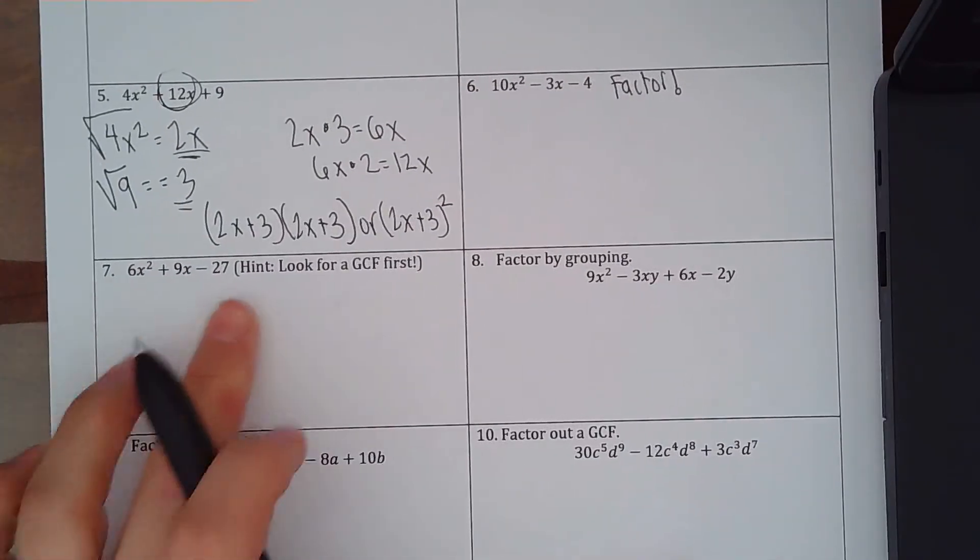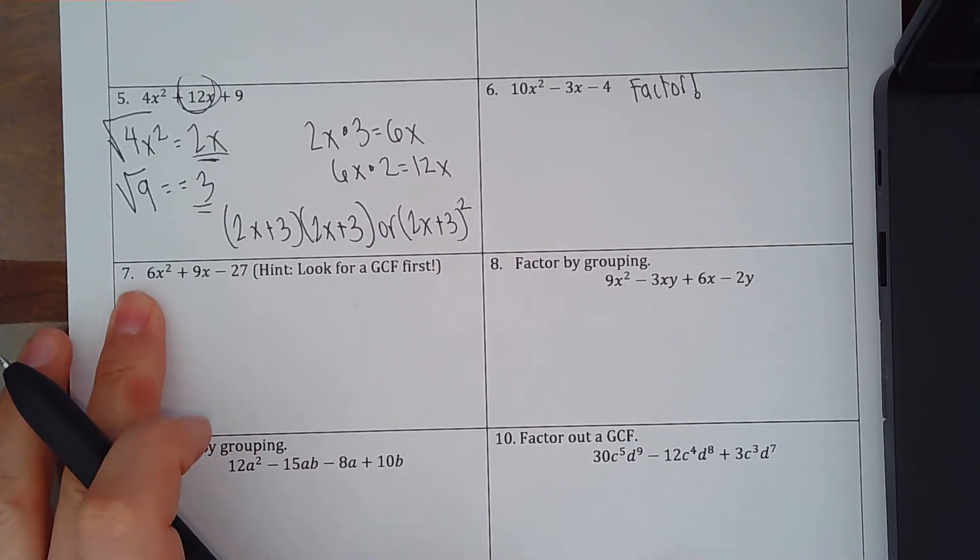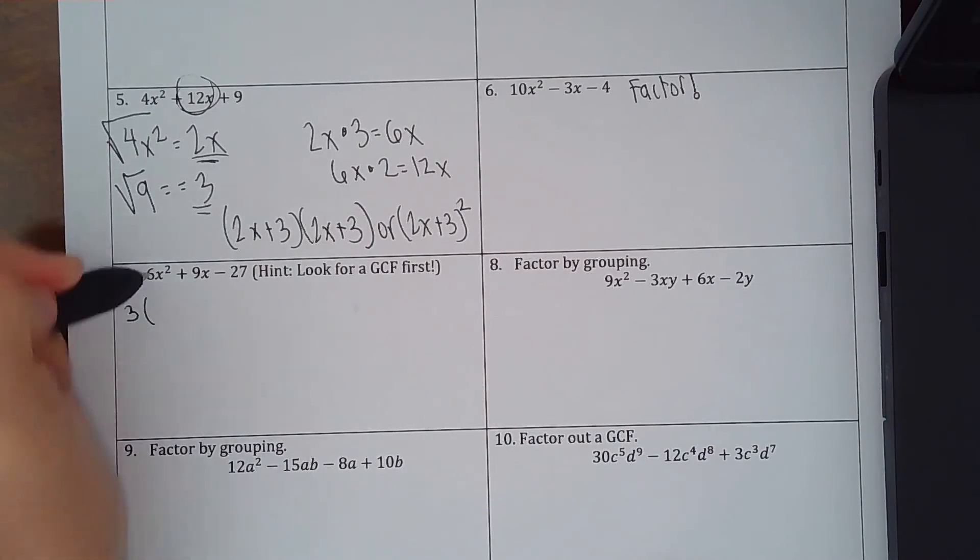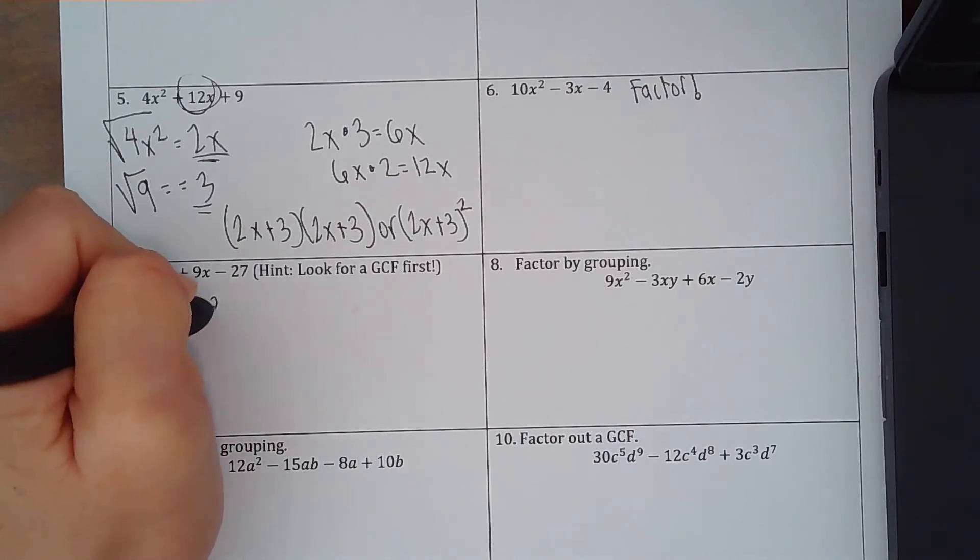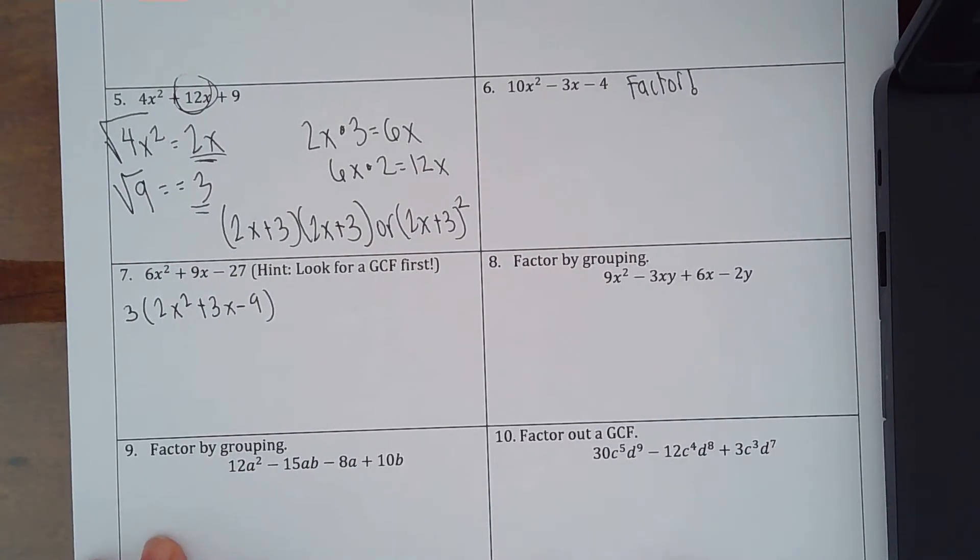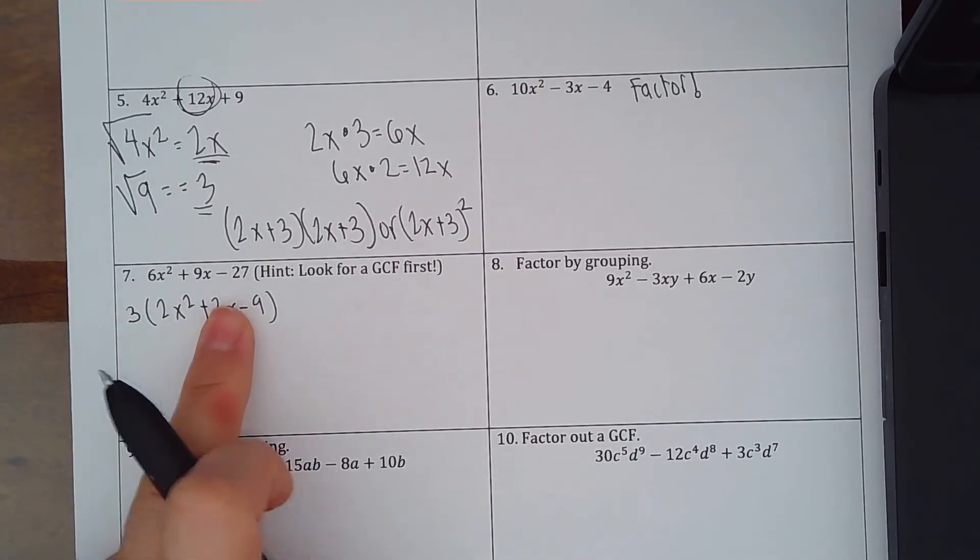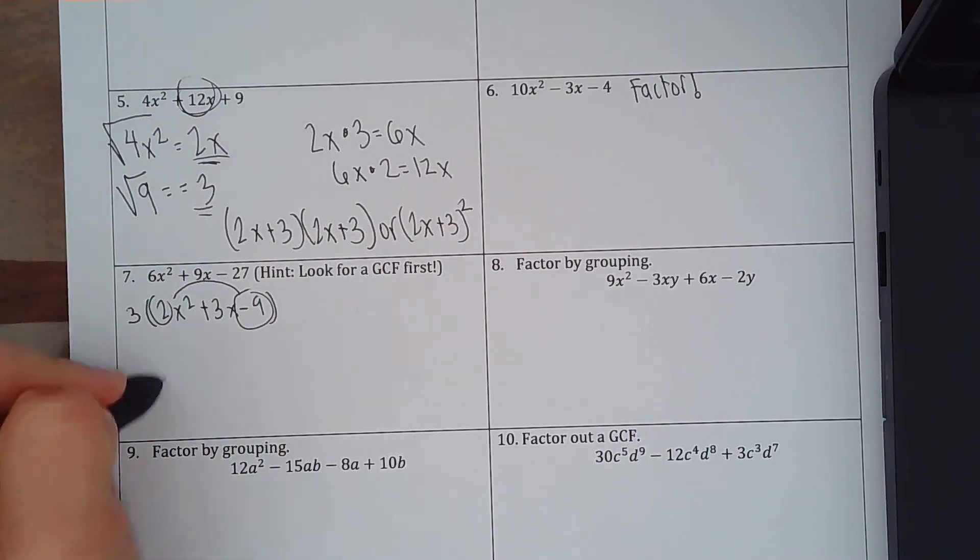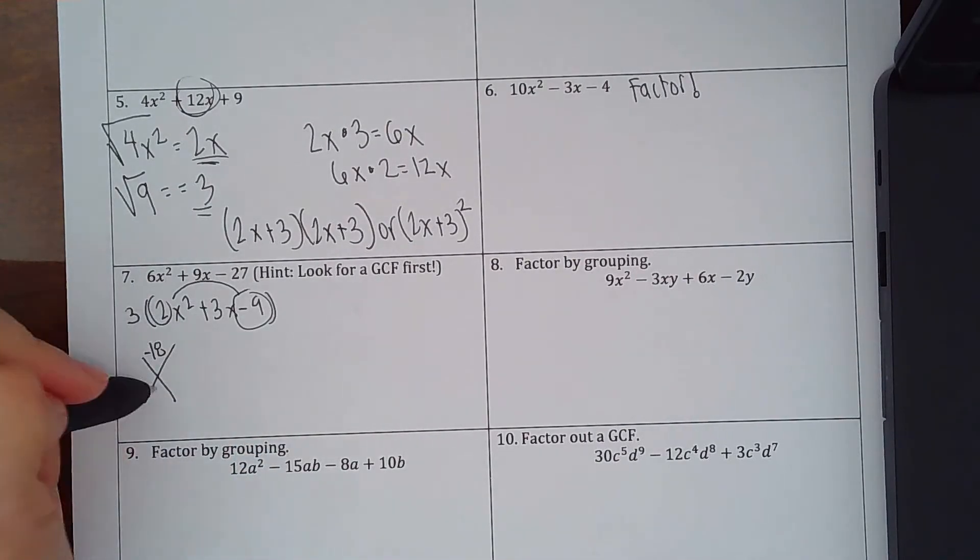This one I will do with you. This one says, hey, look for GCF first. So you're going to see that they are all divisible by 3. So I'm going to factor out a 3, and I'm going to end up with 2x squared plus 3x minus 9. Okay, that's great. Now what I'm going to do is I have to factor this guy right here. So again, I'll multiply my first and my last terms, and I'll end up with a negative 18, and I'll bring down that middle brother nobody likes, number 3.